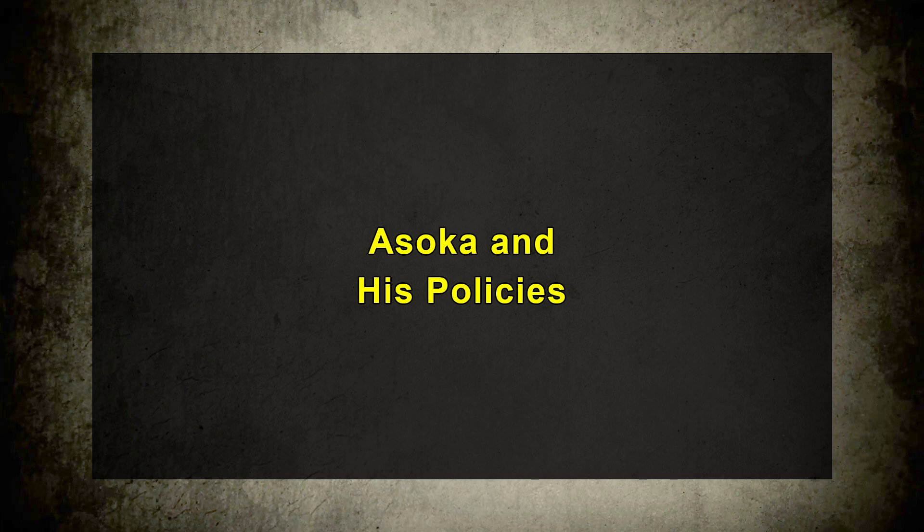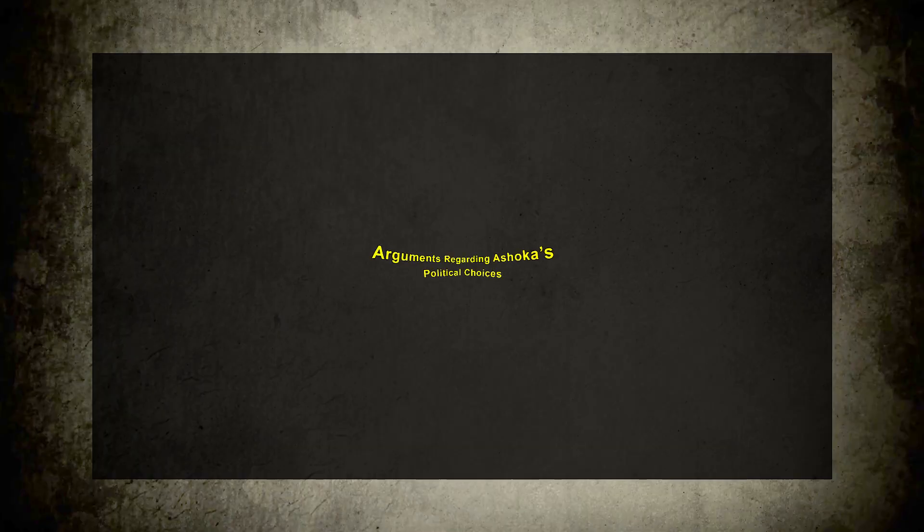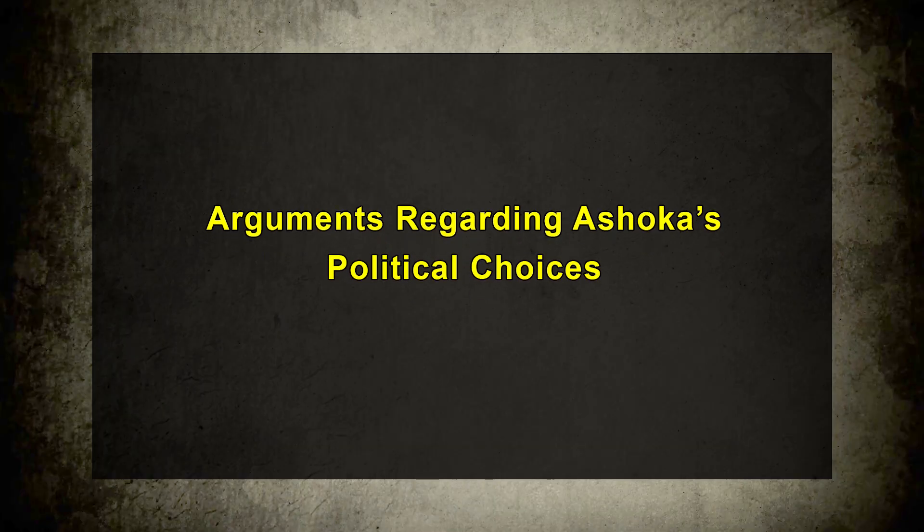We will now talk about Ashoka and his policy of Dhamma and to what extent it was responsible for the decline of the Mauryan Empire. According to many historians, Ashoka's political choices are to blame for the collapse of the Mauryan Empire. Usually, they cite the negative aspects of Ashoka's religious policy. These arguments consist of two branches.